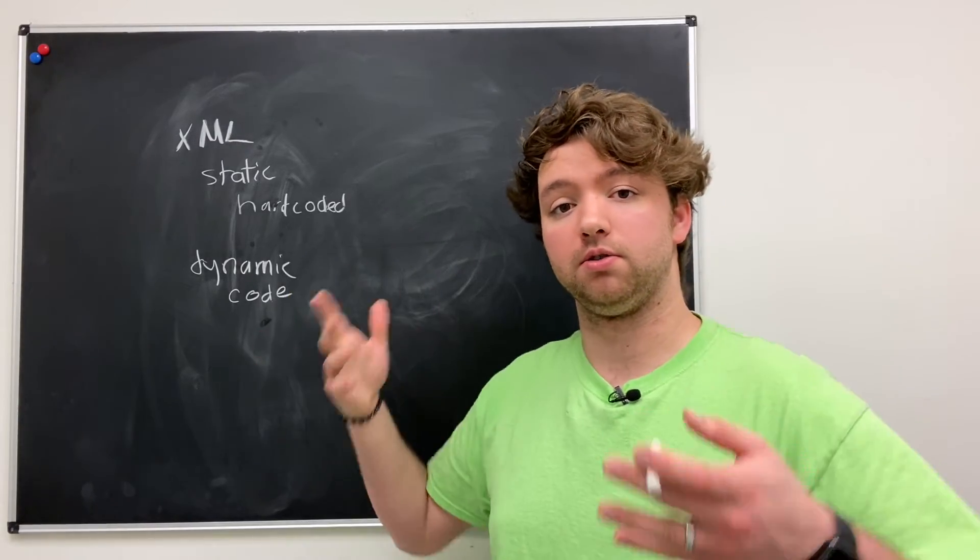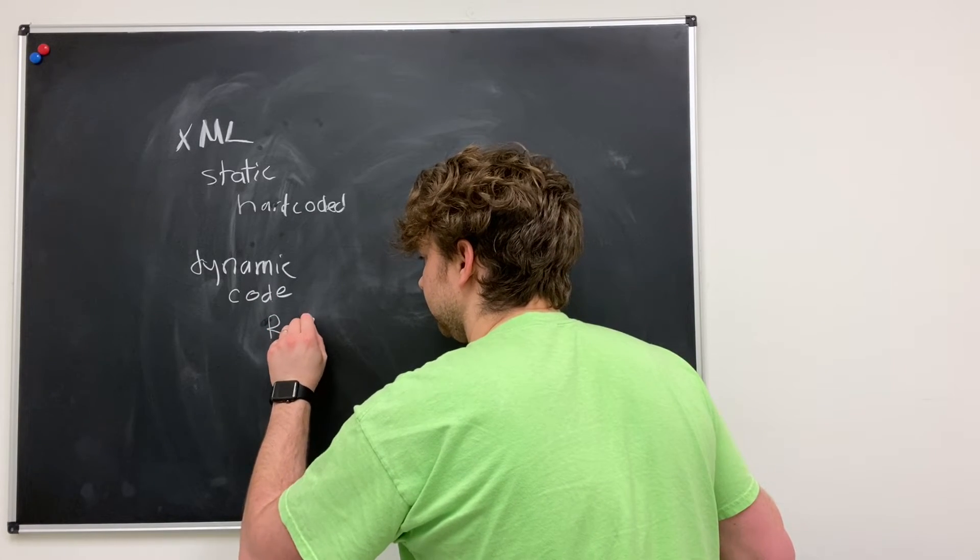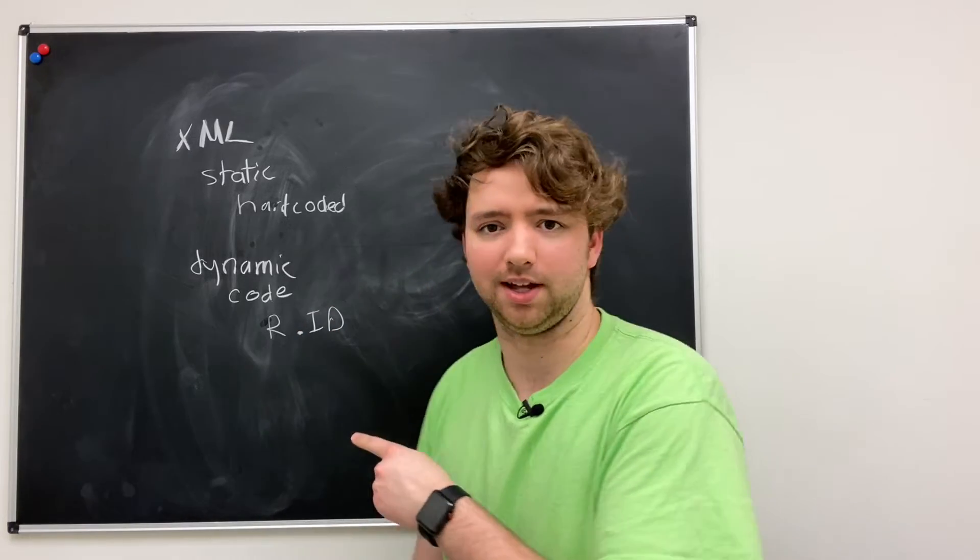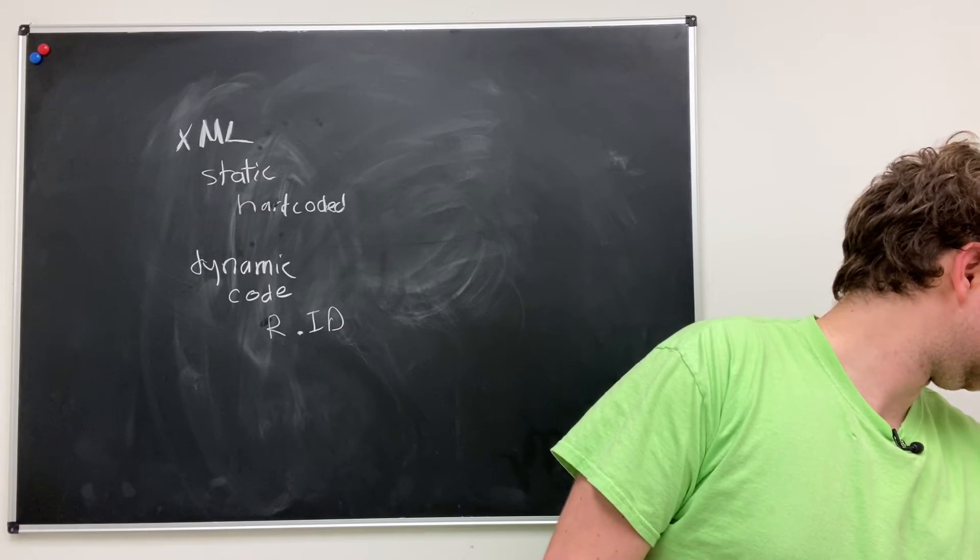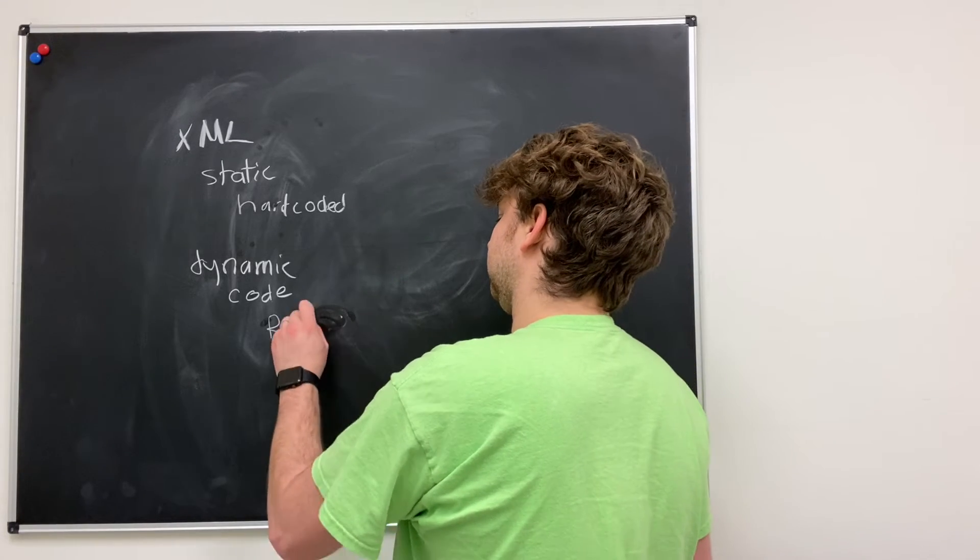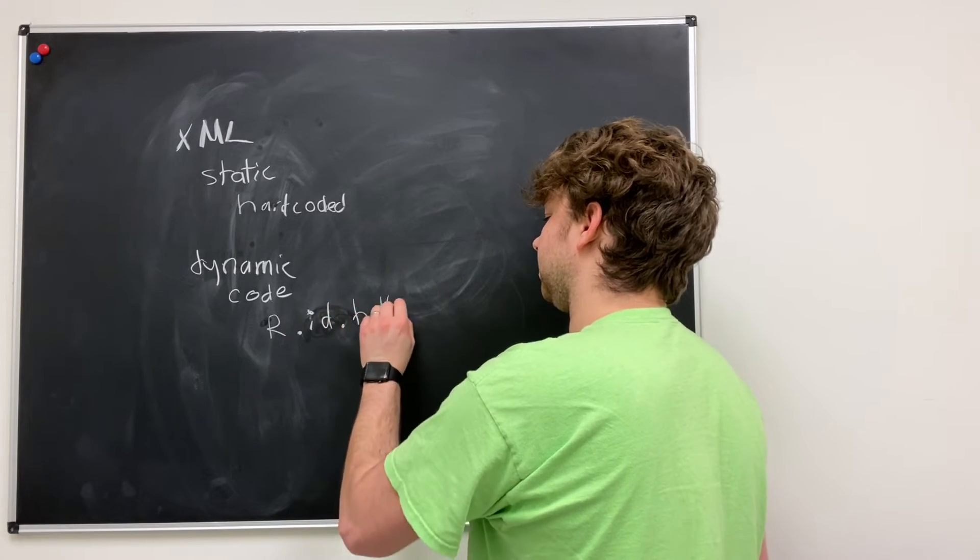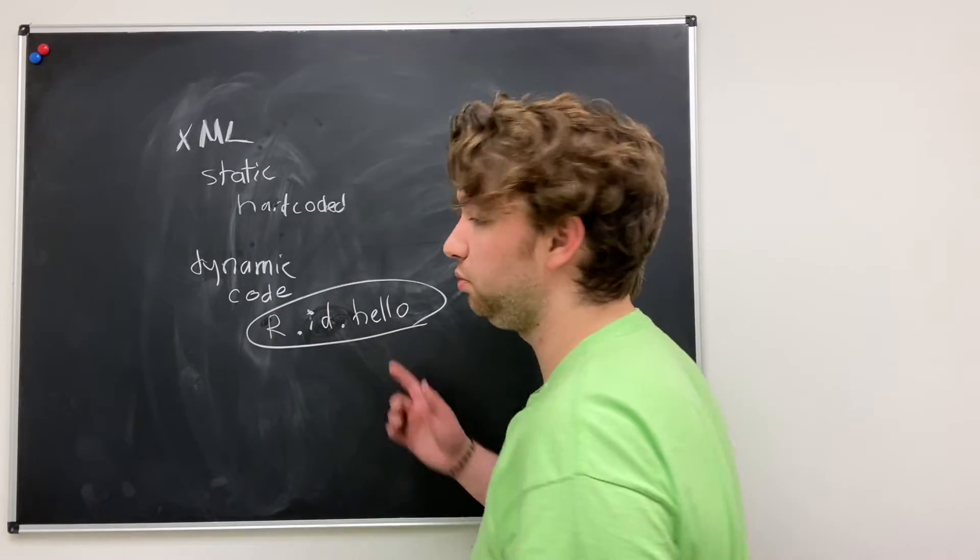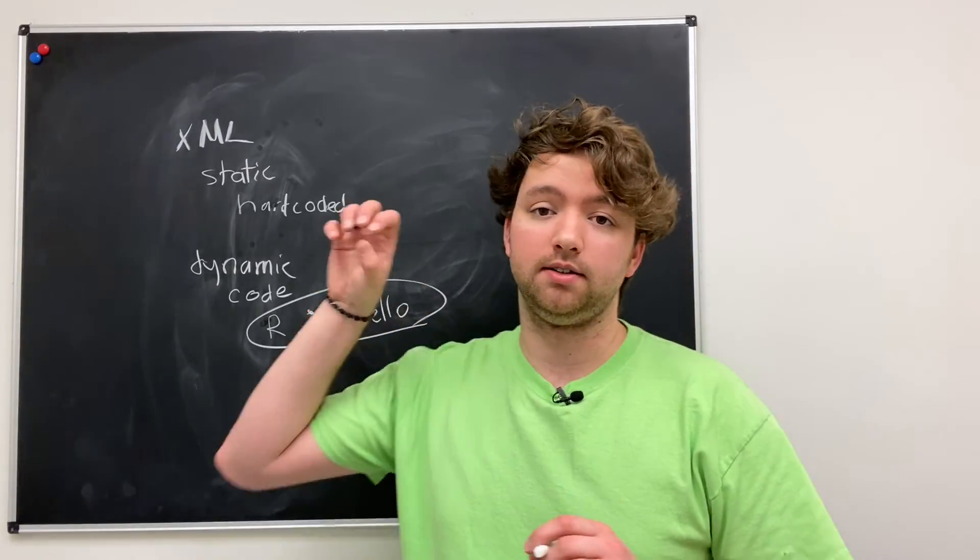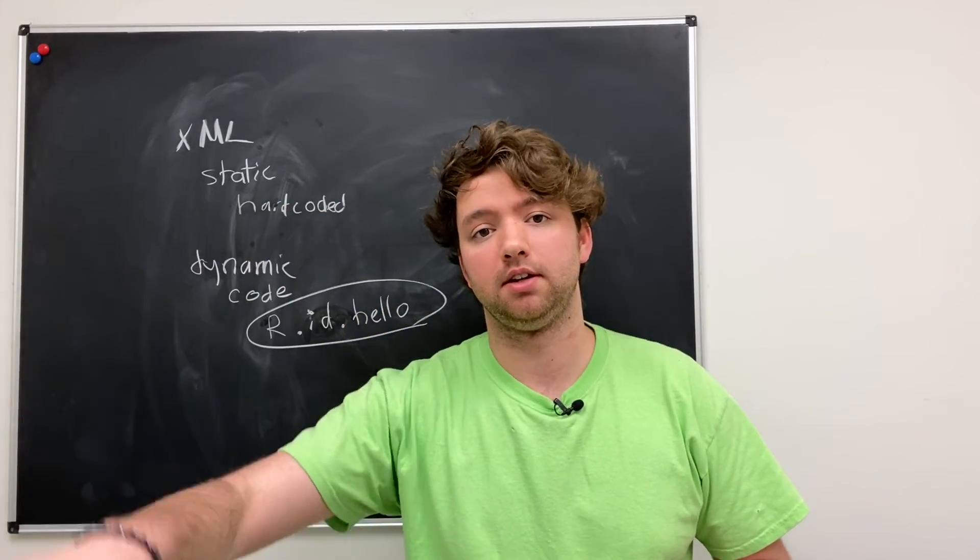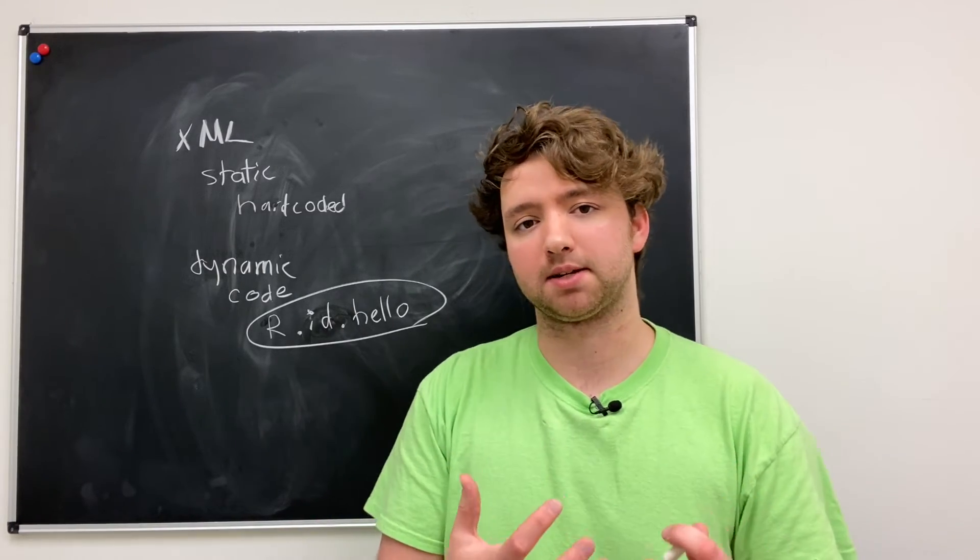So here's an example of a way we can make our code dynamic. You can say R dot ID, I think that's uppercase, let me take a little peek over here. No geez, R dot ID, and then we could say an ID of an element such as hello. We'll be using this as well as findViewById to basically grab an element and update that.